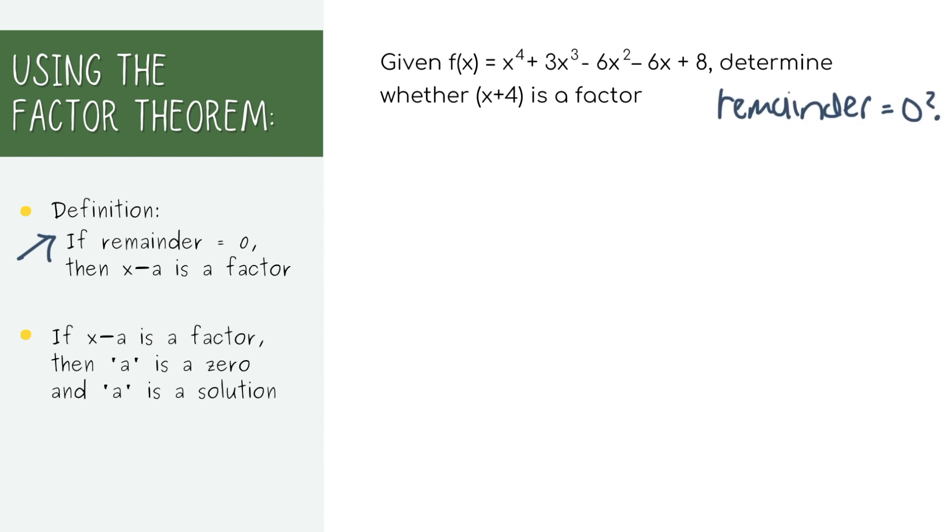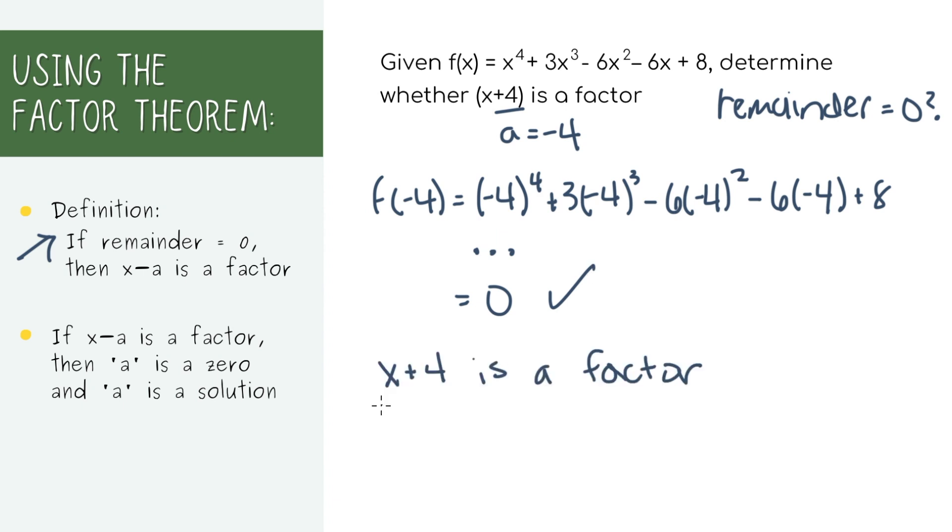So let's use what we've learned before and find the remainder by using the remainder theorem. We'll plug in negative 4 for x and you'll get zero, which is the remainder. So because you have a remainder of zero, that means that x plus 4 is a factor of this polynomial.